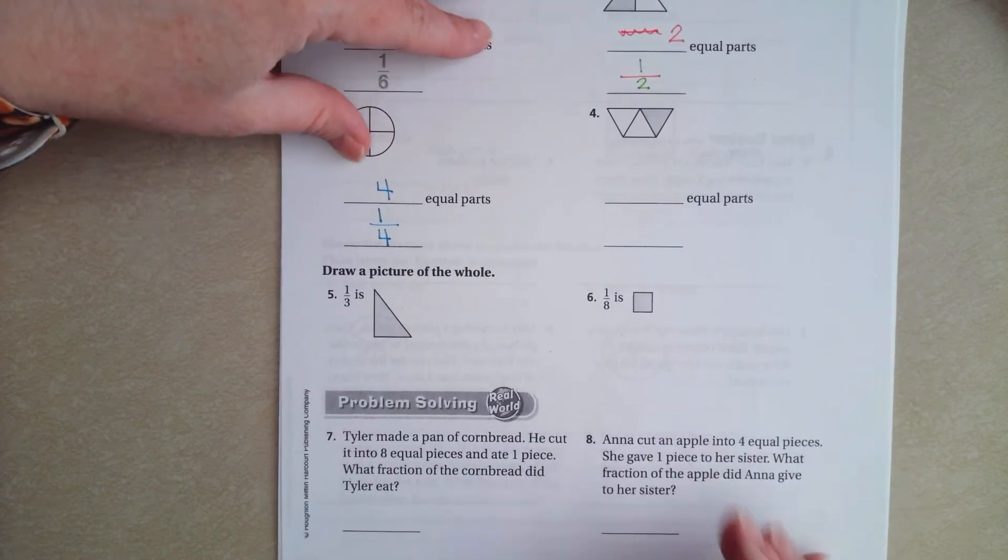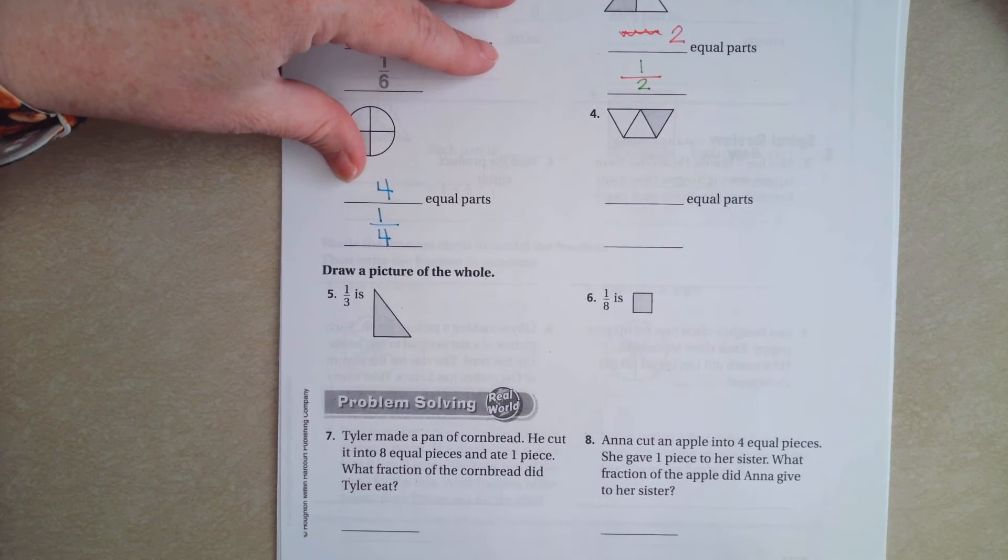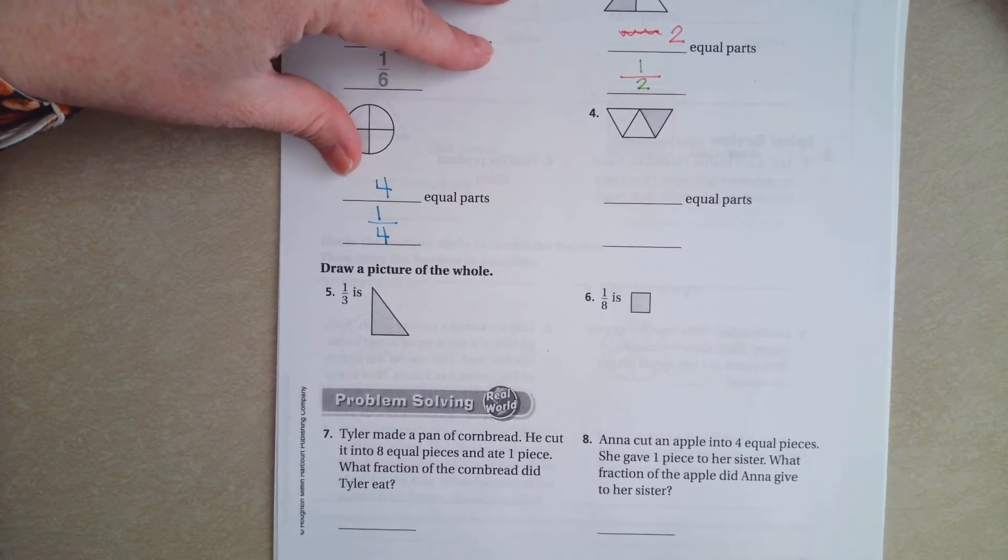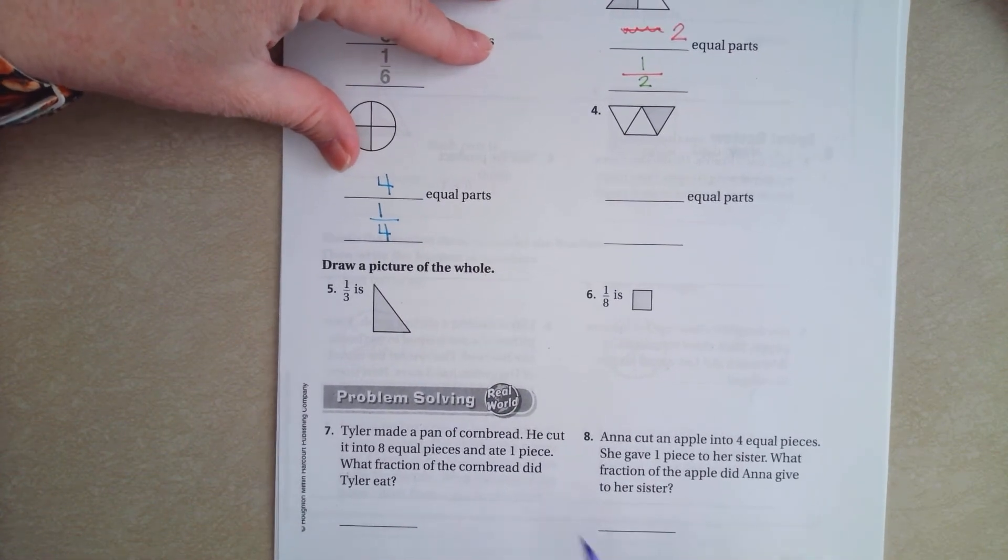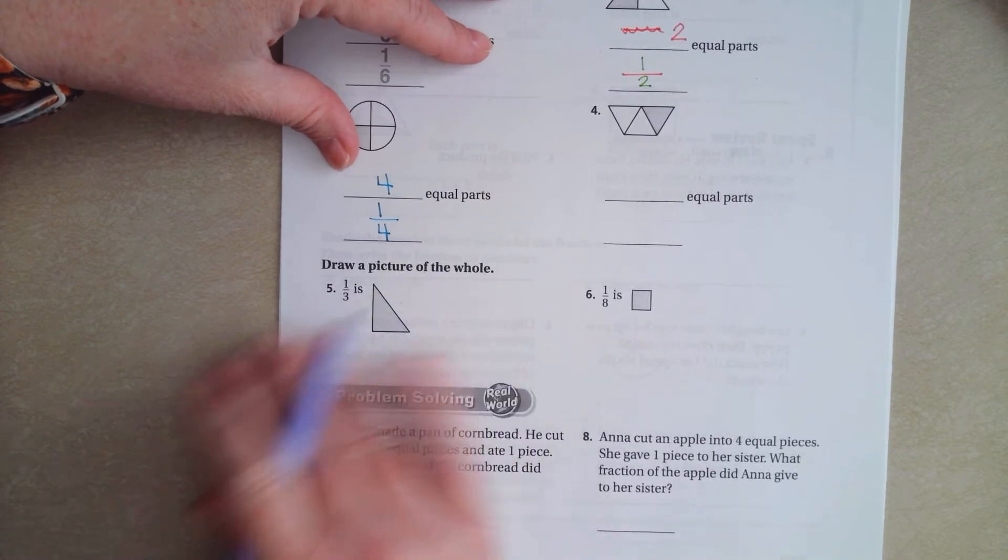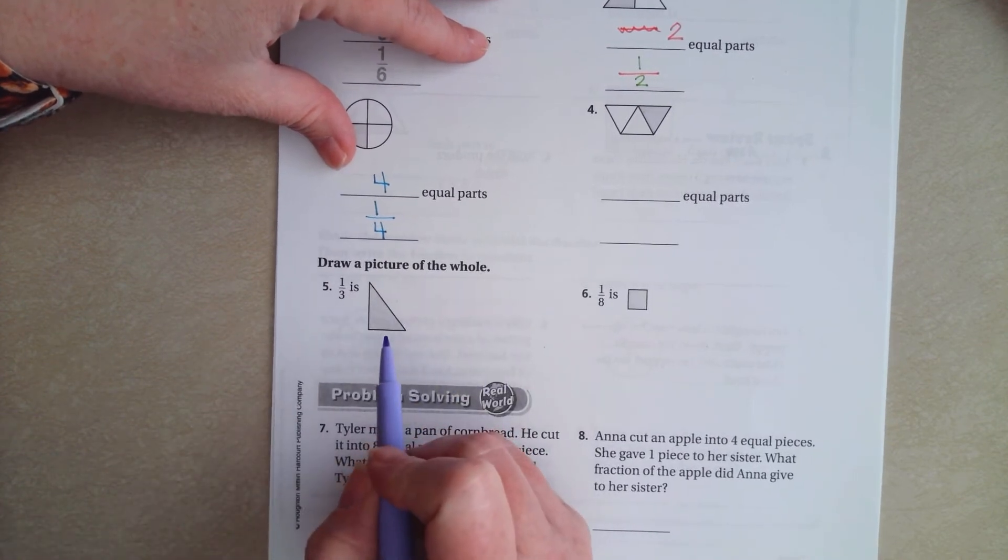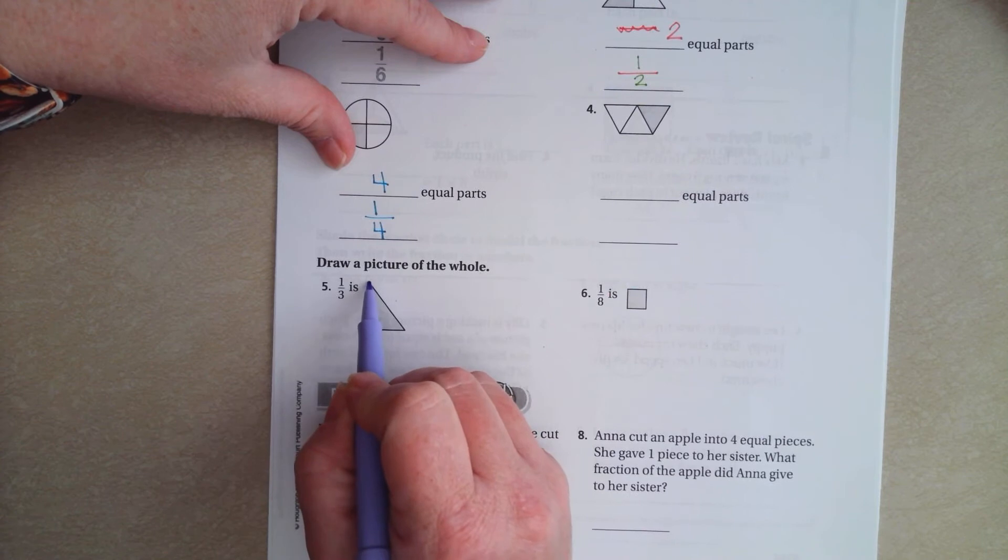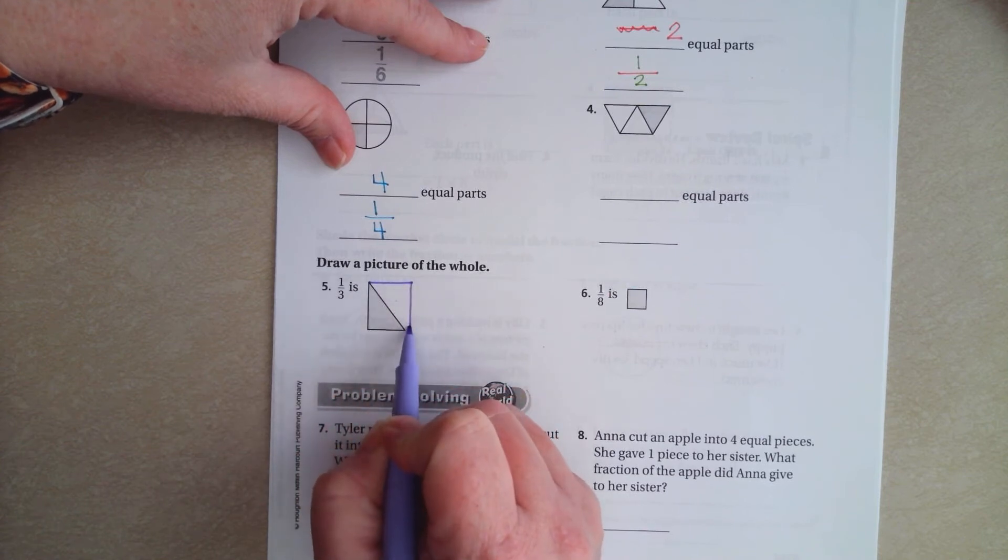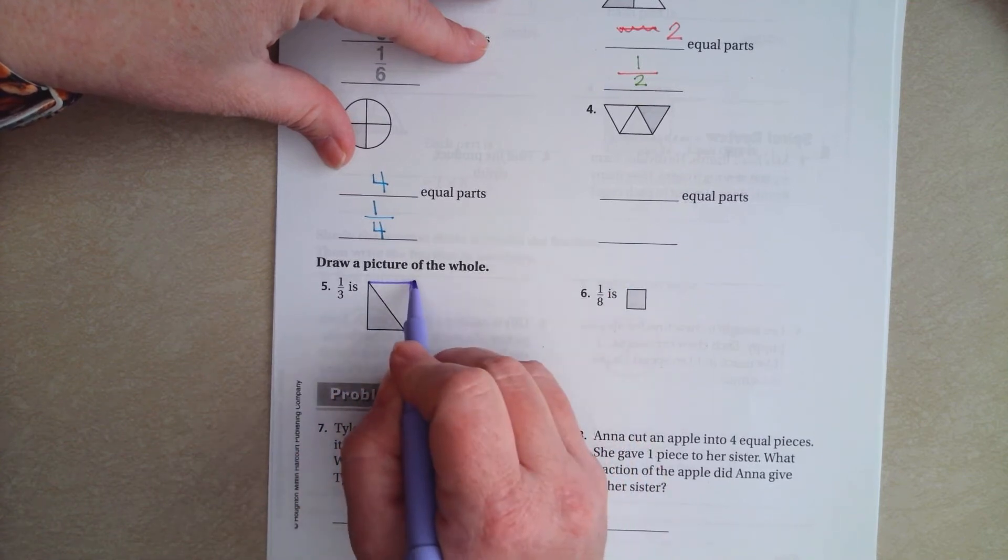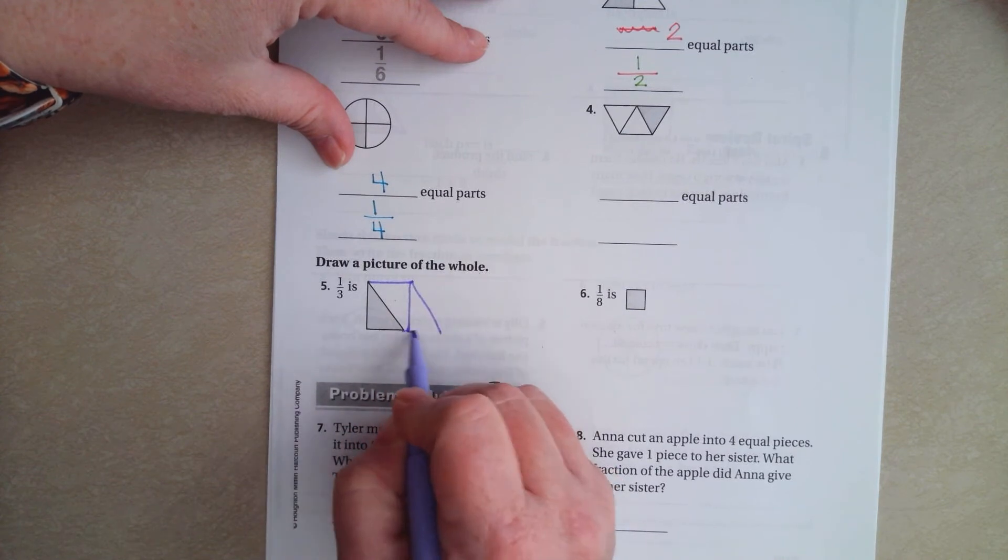We're going to go down, and I'm going to show you guys how to do this one. So it wants us to draw a picture of the whole. So it already has the one-third that's colored in. We need two more thirds to make it so that there's three equal parts.